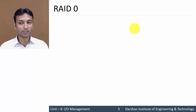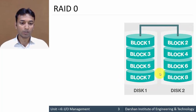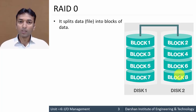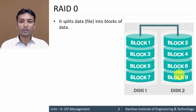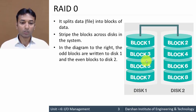Let us start with the first level, RAID 0. In RAID 0, more than one physical drives are combined into a single logical unit. In this case we have combined two disk drives into a single logical unit. Both drives are connected with each other — this is disk 1 and this is disk 2. Your file is split into blocks of data, and each block is striped or placed across the disks in the system.